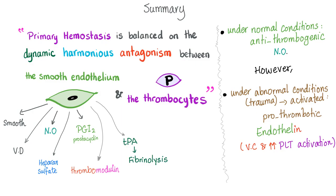Quick summary: primary hemostasis is balanced on the dynamic harmonious antagonism between the smooth endothelium, which wants blood to flow, and the thrombocytes, which favor blood clotting. The smooth endothelium prevents blood clotting by being smooth, providing a non-coagulatory surface, and by vasodilation, release of nitric oxide, heparin sulfate, prostacyclin, thrombomodulin — which modulates thrombin — and secreting tPA to help fibrinolysis and remove the clot.